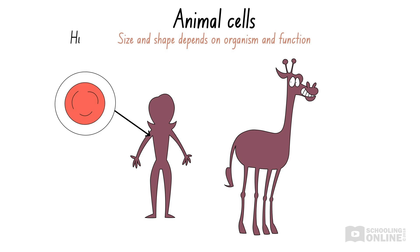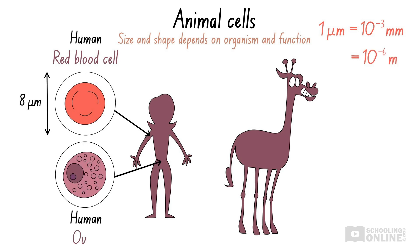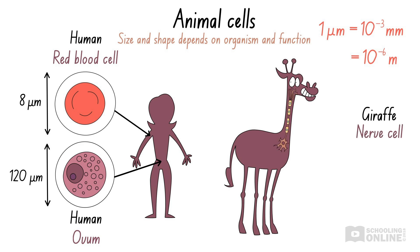For example, a human red blood cell has a diameter of approximately eight micrometres. Remember, one micrometre is equal to one thousandth of a millimetre, or one millionth of a metre. Meanwhile, a human ovum, which is an egg cell in the female body, averages 120 micrometres in diameter. And surprisingly, a nerve cell in a giraffe's neck can grow up to three metres in length.